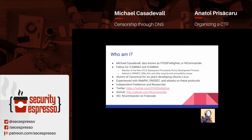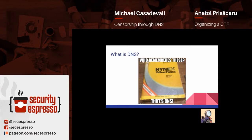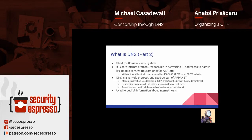To begin this talk, let's talk about what DNS actually is. DNS is short for the domain name system. It's a core internet protocol that converts IP addresses to names and back, like google.com or twitter.com. Without it, we'd be stuck remembering IP addresses instead of names. DNS is one of the oldest protocols still in use on the internet, and it does show. The modern incarnation was standardized in 1987, and it's hierarchical in nature, with all entries stemming from a single root zone managed by ICANN. It was one of the first mostly decentralized protocols on the internet.